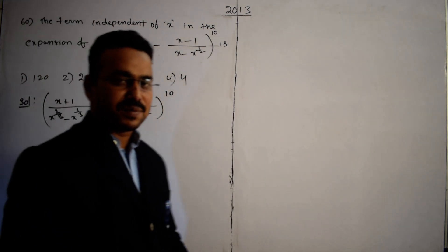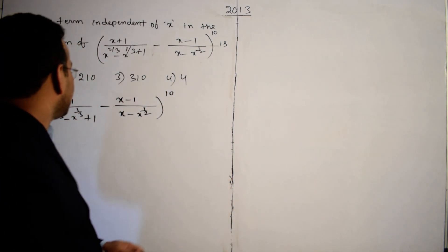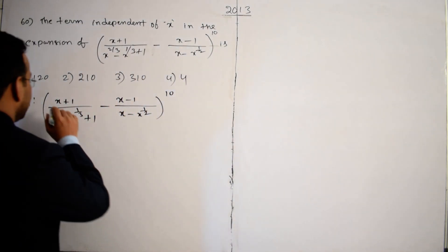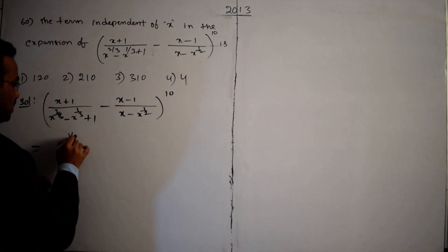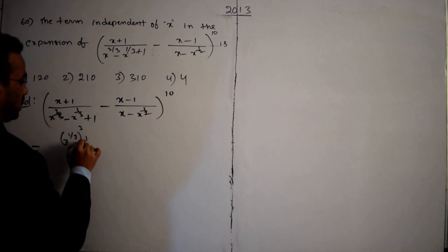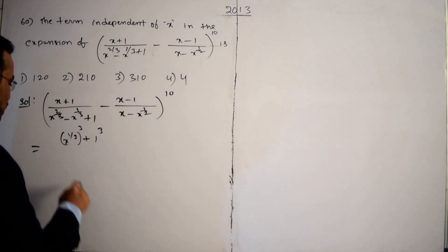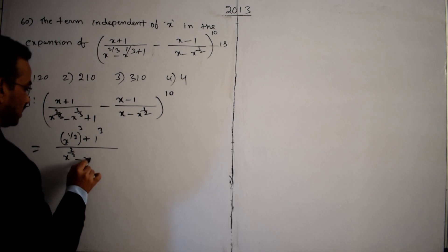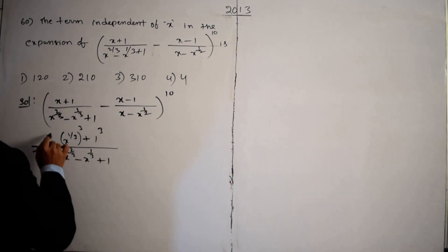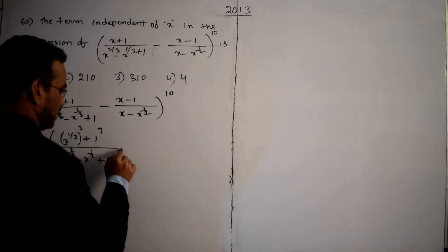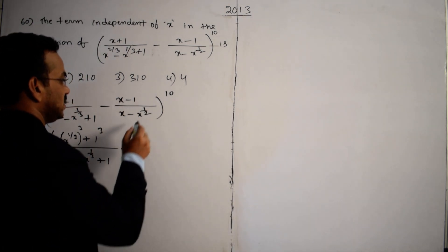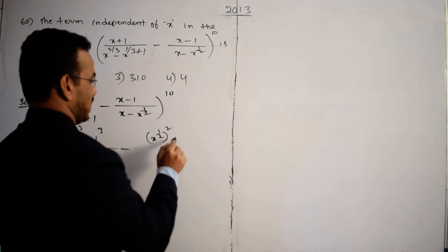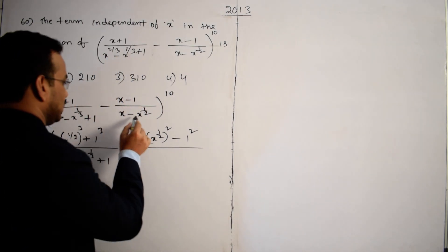If you observe the first term, in the denominator there is x^(2/3) and x^(1/3). I am adjusting the numerator accordingly. x can be written as (x^(1/3))³ and 1 as 1³, giving x^(1/3)³ + 1³ divided by x^(2/3) - x^(1/3) + 1. The first term is set up.